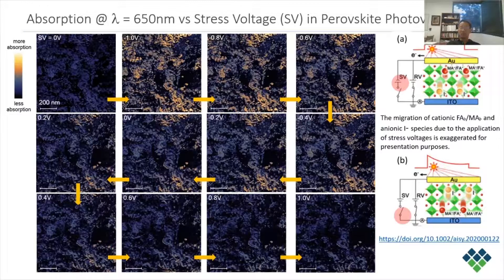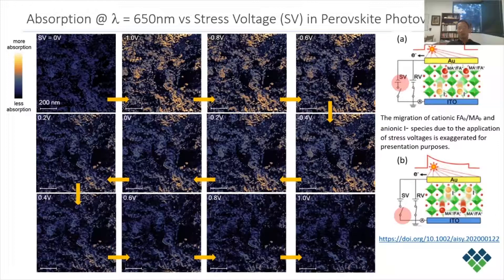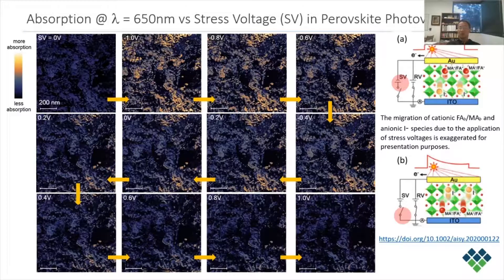As the stress voltage is decreased from minus 1 volt to 0 volt in 0.2 volt steps, the electric field that holds the positively charged ions gets weaker and becomes less effective at maintaining the surface ionic species. Consequently, some ions drift back into the deeper region under concentration gradient, leading to a decrease in both the PIFM signal intensity and absorption areas, shown in PIFM images 2 through 7. When the polarity of the stress voltage is reversed, corresponding to figure B, the organic cations are driven away from the perovskite surface by the electric field, which further reduces the absorption intensity, now shown in PIFM images 7 through 12.